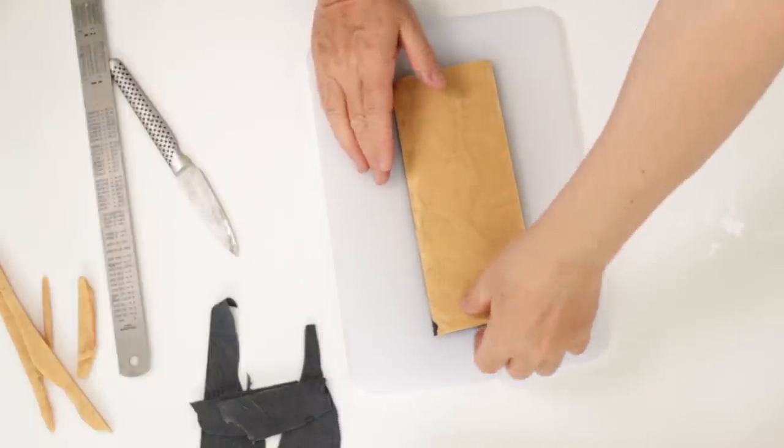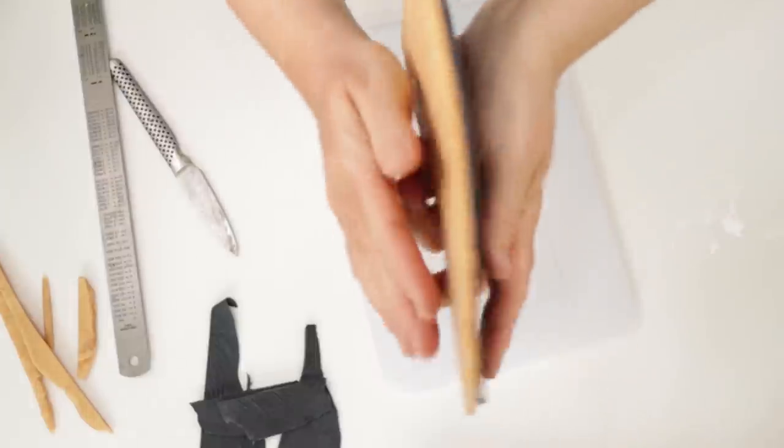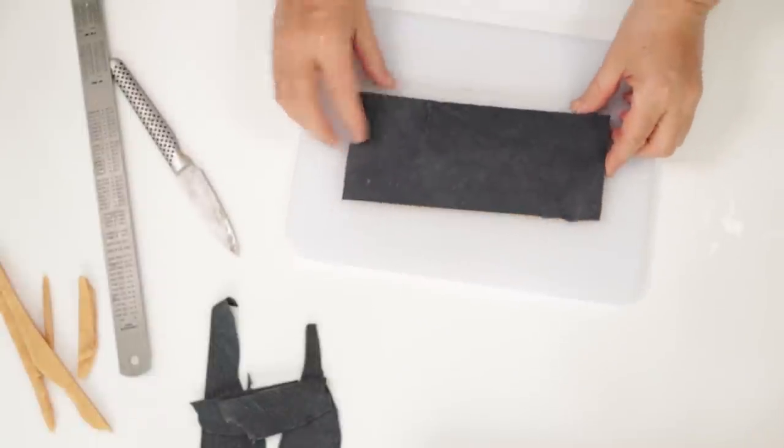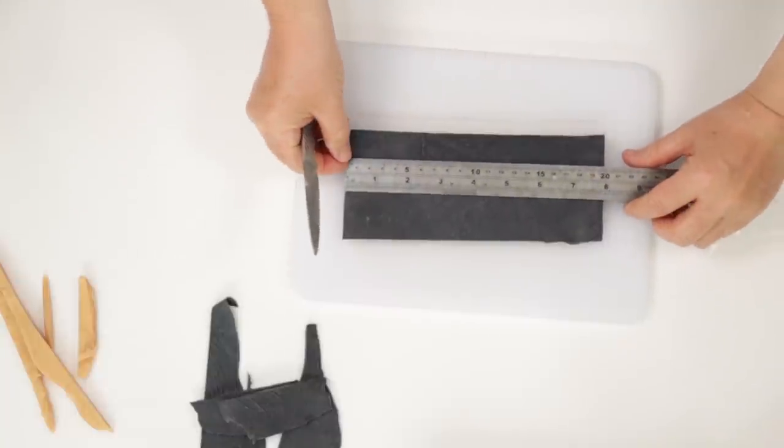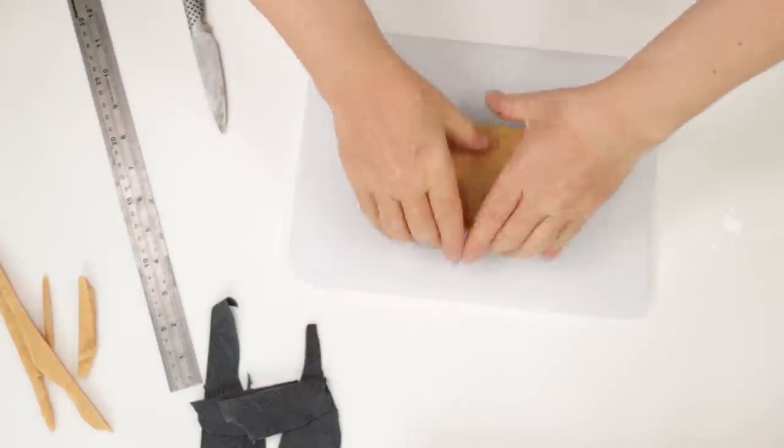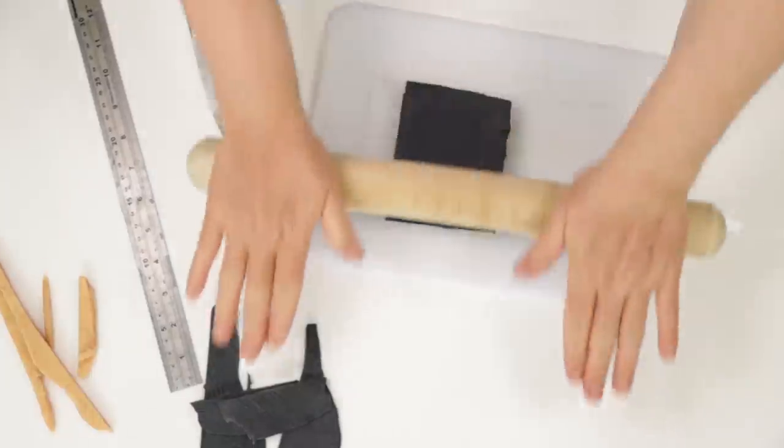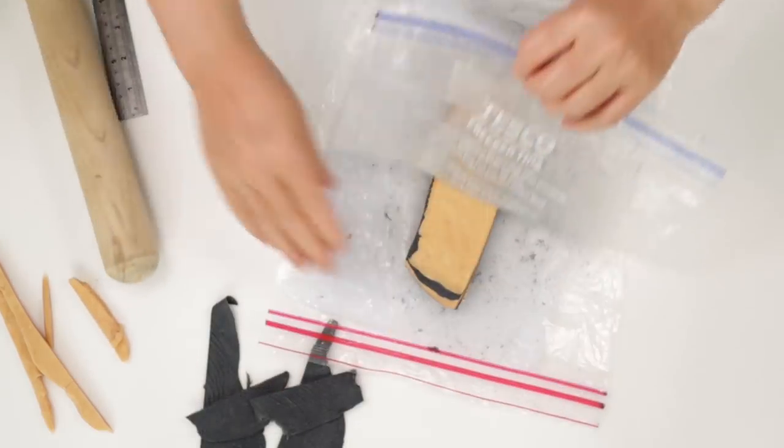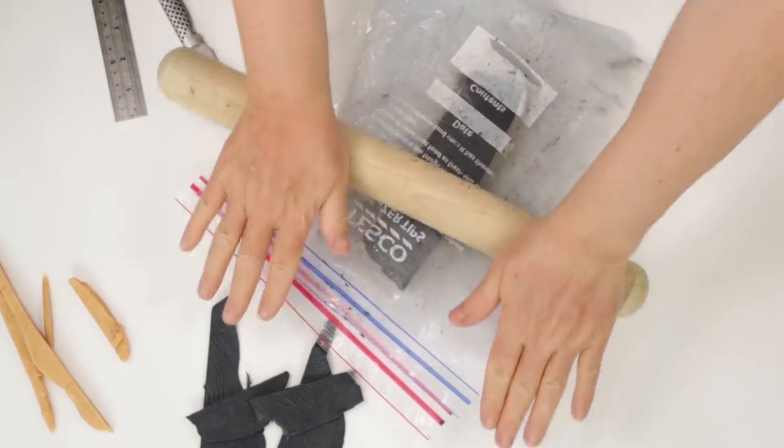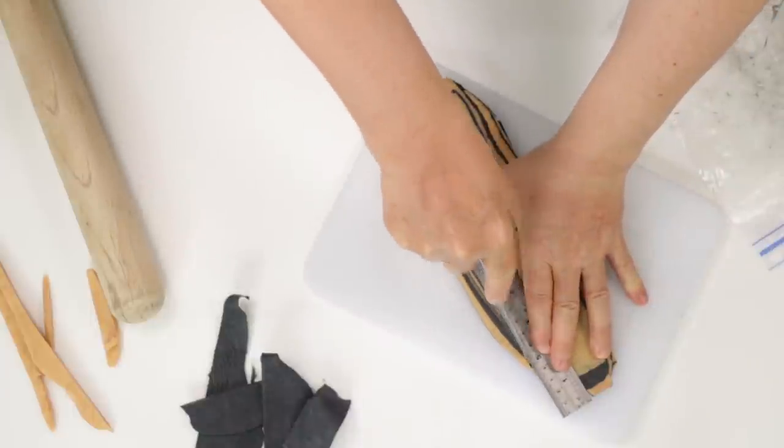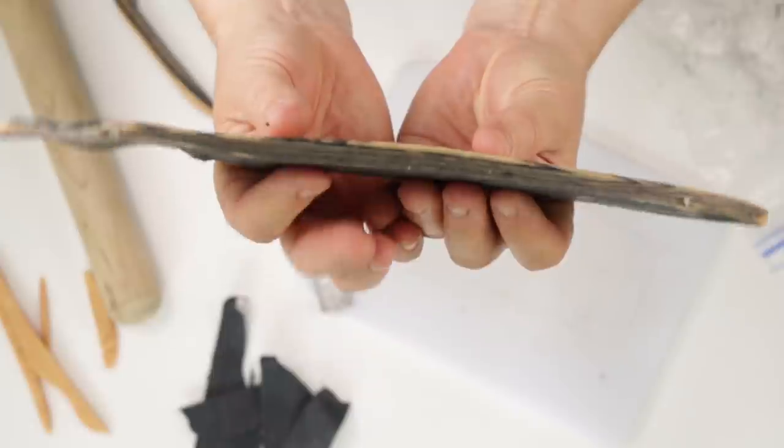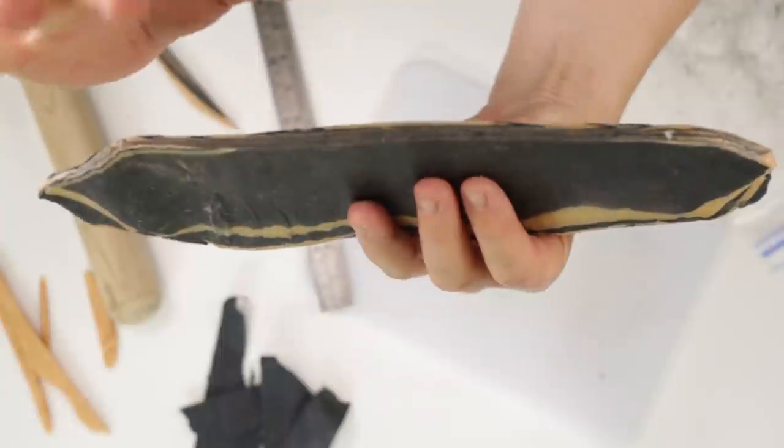I've now got my two layers. The black is thinner than the goldy color and I'm just going to layer those together.